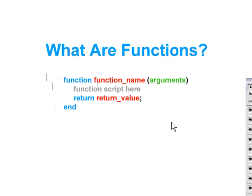So if we were creating a function to calculate taxes you might name your function calculate_tax. Don't put any spaces in the names of your functions — just use underscores wherever you need to put a space between words, and stick to whatever good naming convention you've been using for variables and tables.